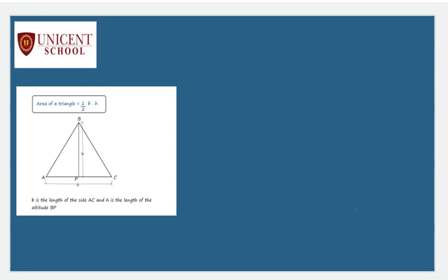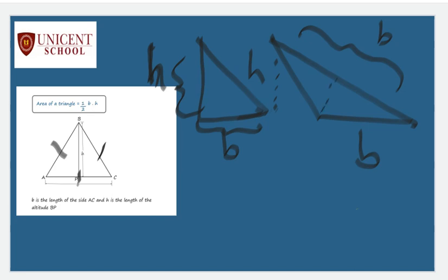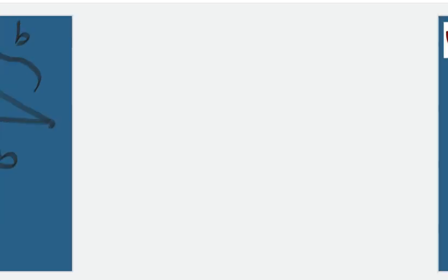The area of a triangle is equal to half base times height. This formula applies to equilateral, isosceles, and scalene triangles alike. In a right angle triangle, one leg forms the base and the other forms the height. For an obtuse triangle, we take the base and draw a perpendicular height to it - or if the other side is taken as the base, the corresponding perpendicular height must be used. We need to be careful while taking the base and height into consideration when calculating area.